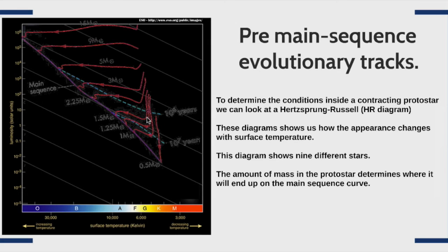The next stage is when the interior of the star becomes dense and hot enough that electrons are freed from atoms at the center of the protostar. At this point, the luminosity remains roughly constant but energy is radiated to the surface, causing the surface temperature to increase. So we see an almost constant luminosity with an increasing temperature. Finally, the protostar falls down onto the main sequence and becomes a main sequence star.